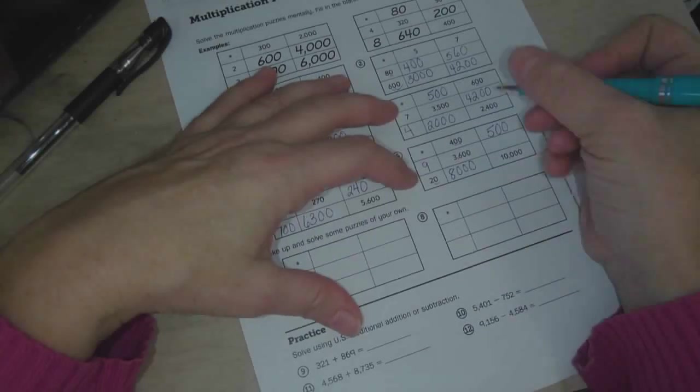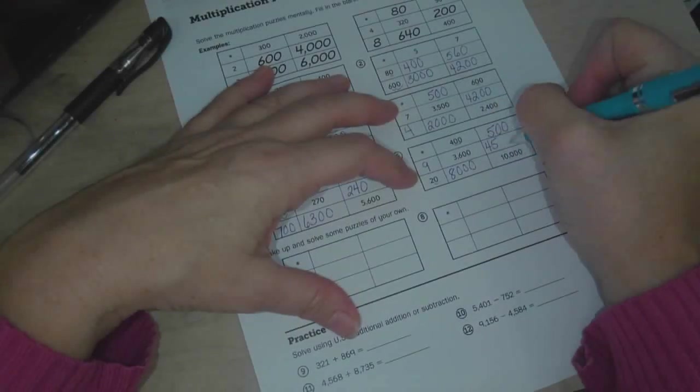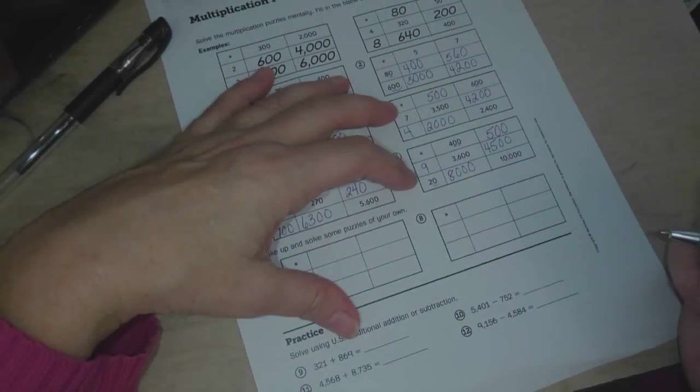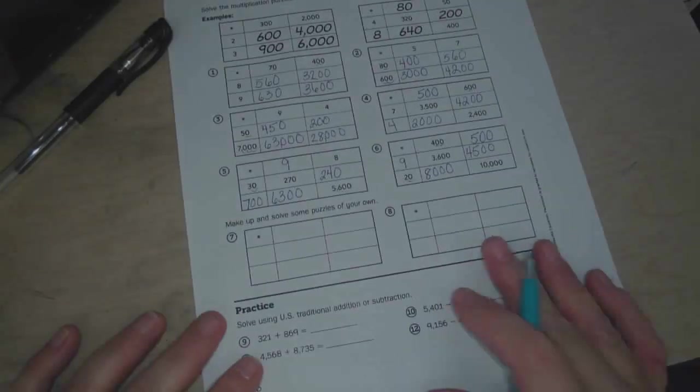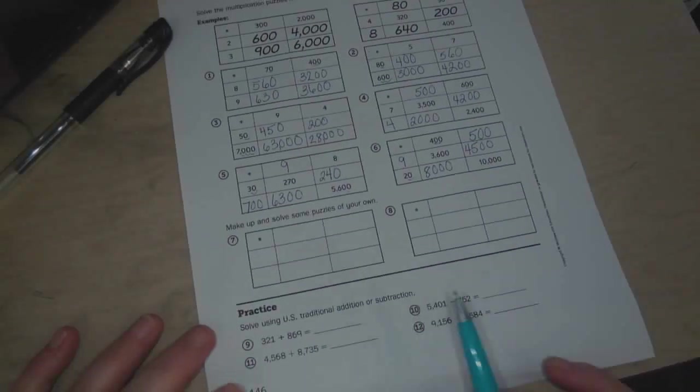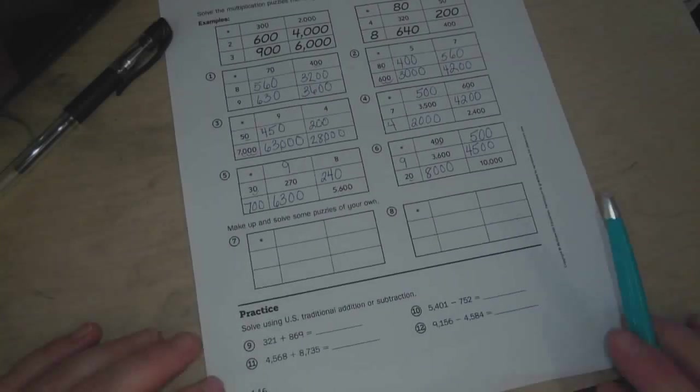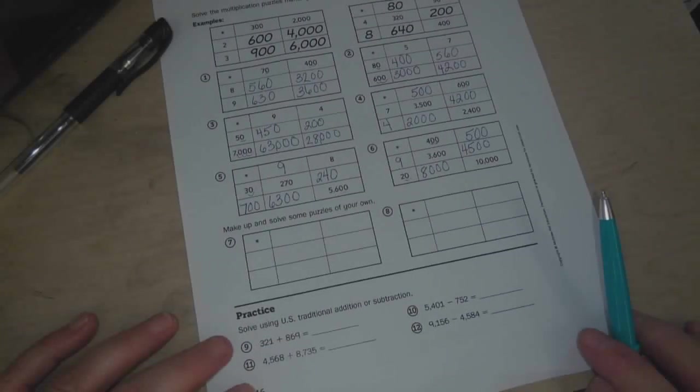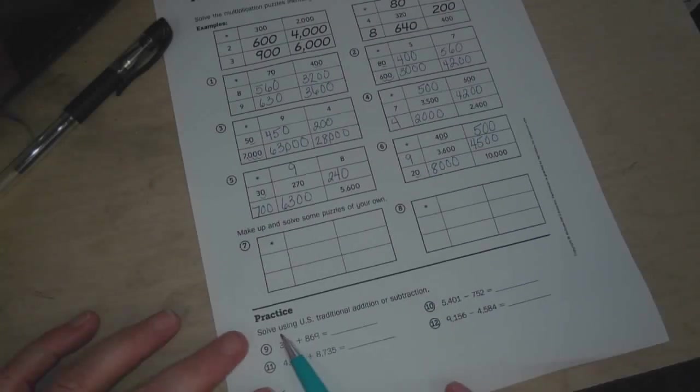9 times 500, so 9 times 5 is 45. And then we put the two zeros there. So hopefully that wasn't too bad. These here make up puzzles of your own. You can put whatever you want there.